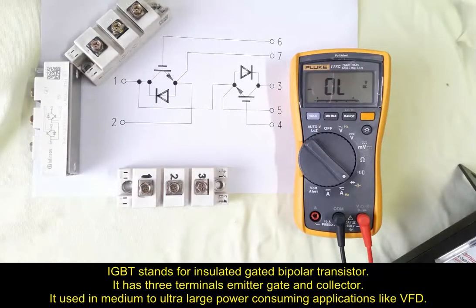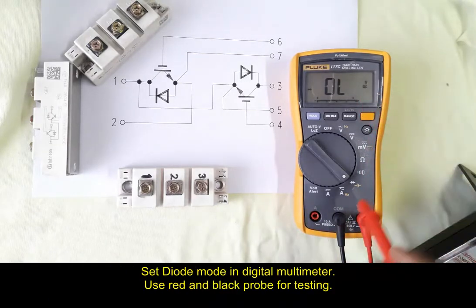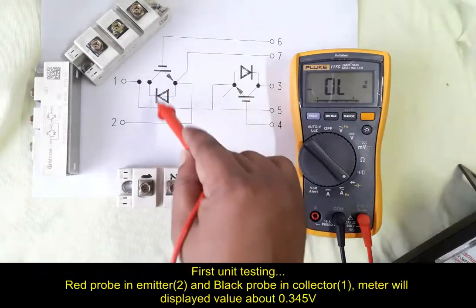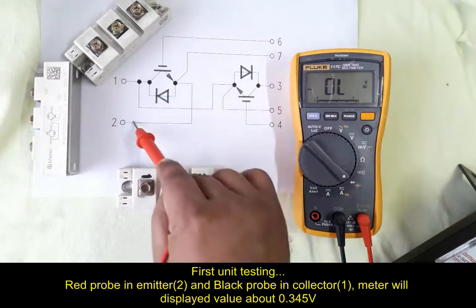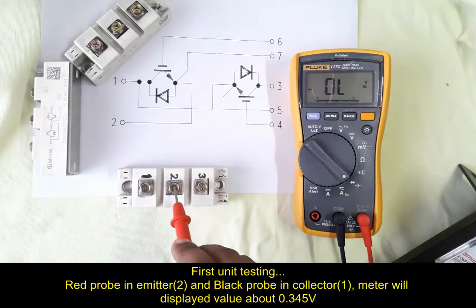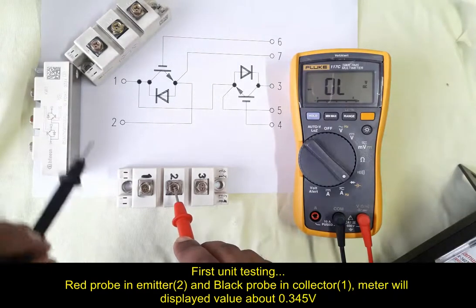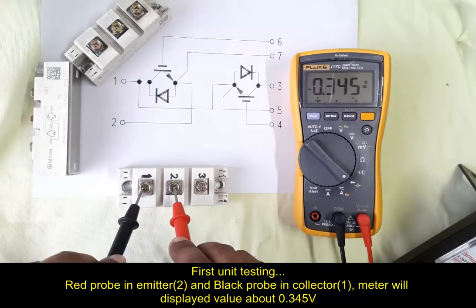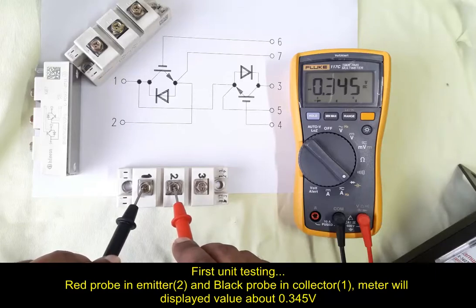Insulated Gate Bipolar Junction Transistor or IGBT testing. Set diode mode in digital multimeter using red and black probes for testing IGBT. Red probe in emitter terminal 2 and black probe in collector terminal 1, meter will display 0.345 volts.